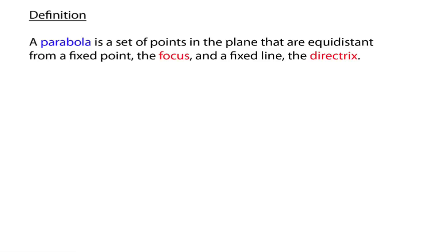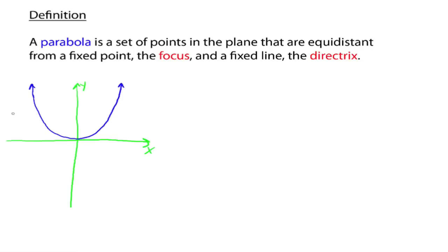In this video we're going to talk about another conic section called the parabola. A parabola is a set of points in the plane that are equidistant from a fixed point, called the focus, and a fixed line, which is called the directrix.